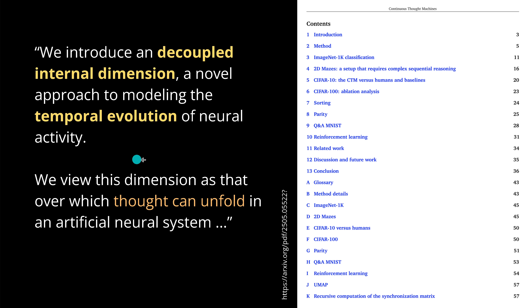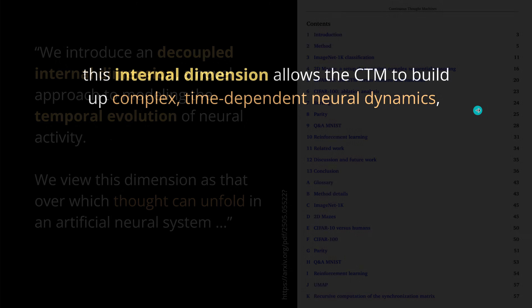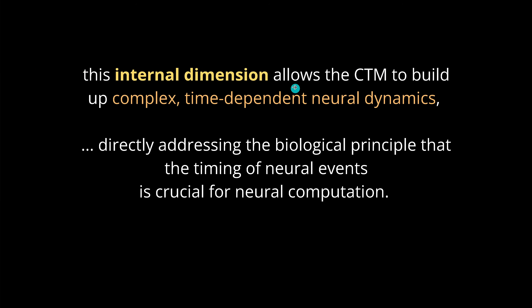They describe this new dimension as one over which a 'thought' can unfold in an artificial neural network — similar to biological systems. We need a new mathematical space, a new dimension where thinking can happen, with a temporal evolution. This new internal dimension allows the Continuous Thought Machine to build up complex time-dependent neural dynamics. It is essentially a mathematical construct — we add a dimension and fill it with dynamic behavior.